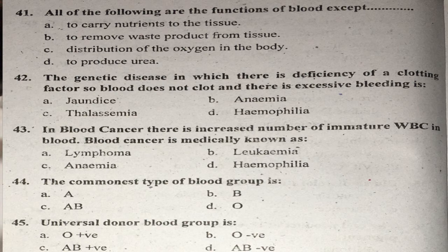Question forty-two: A genetic disease in which there is deficiency of clotting factors so blood does not clot and there is excessive bleeding — what is this called? The answer is hemophilia. Right answer is D — hemophilia.